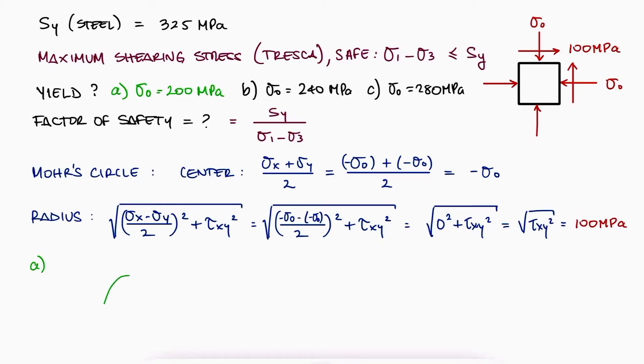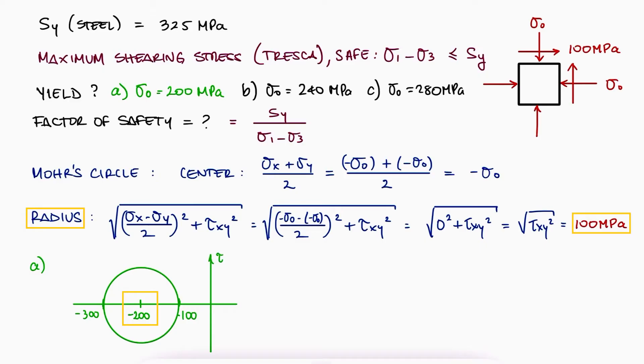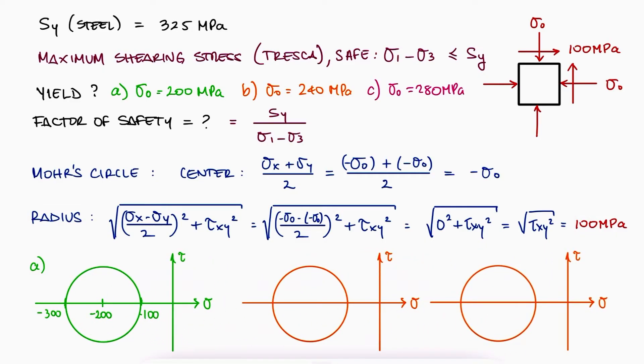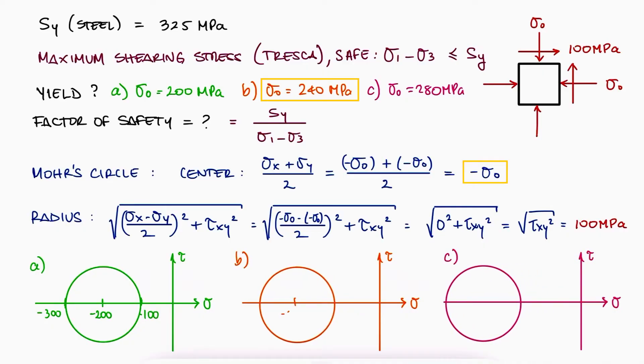This means that for case A, the center is at minus 200 and the maximum and minimum stresses at minus 200 plus 100 and minus 200 minus 100. For case B and C, the centers would be at minus 240 and minus 280. Their max and min principal stresses would be at the center plus and minus a radius.